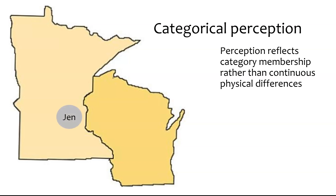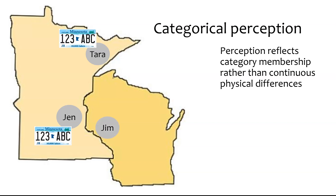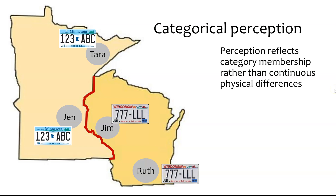Suppose Jen lives in the Twin Cities, and her friend Tara lives up in Duluth. Both of them drive around in cars with Minnesota license plates. Jim lives in Eau Claire, which is just across the border, so even though he lives very close to Jen, his license plate looks very different. The difference here is that boundary line between the two states. Ruth lives pretty far from Jim, but even she has a Wisconsin license plate. So the similarities or differences between license plates represent the state you're in rather than the actual distance between the two people — otherwise, Jen and Jim would have very similar license plates.